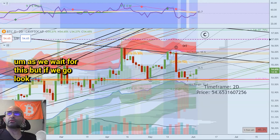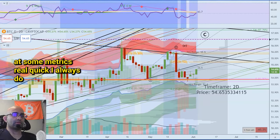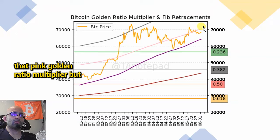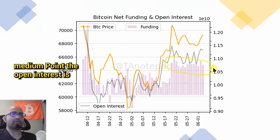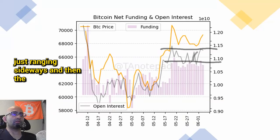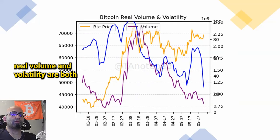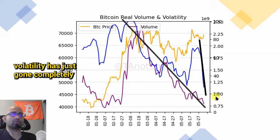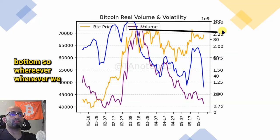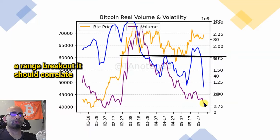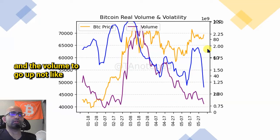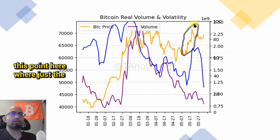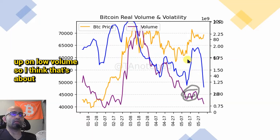If we go look at some metrics real quick — we're kind of backtesting that pink golden ratio multiplier, but the purple golden ratio multiplier is kind of creeping up. The net funding is kind of at a medium point. The open interest is kind of going up, kind of ranging sideways. And then the real volume and volatility are both pretty much bottomed out — volatility has just gone completely bottomed. So whenever we break out of this range and actually get a range breakout, it should correlate with the volume inverting and the volatility going up. That's the most bullish case — we want the volatility and the volume to go up.